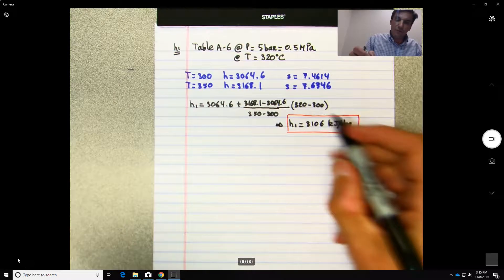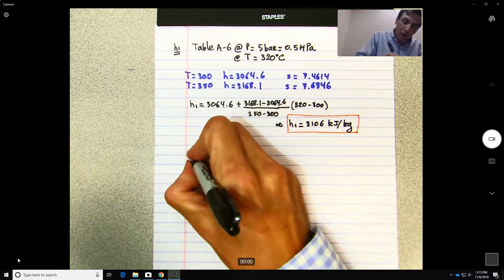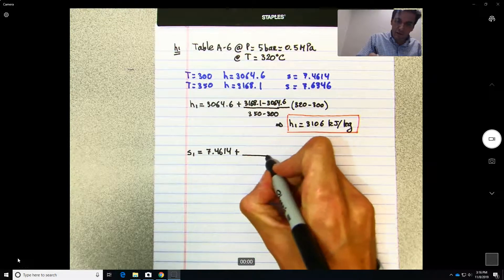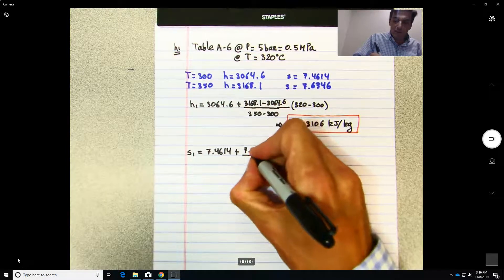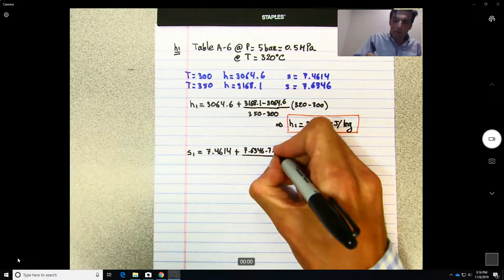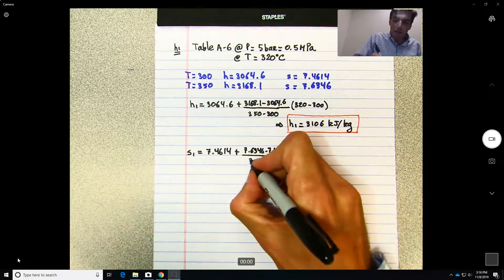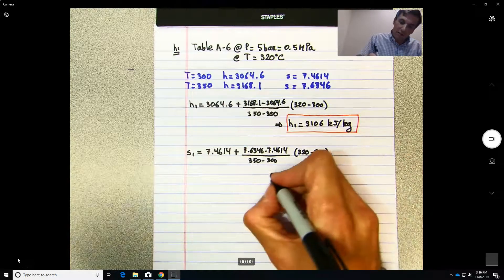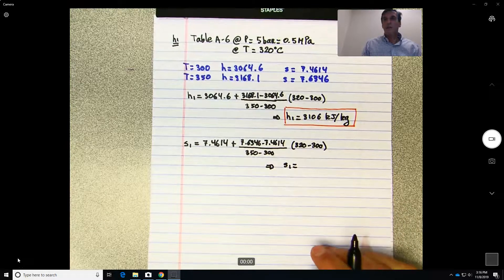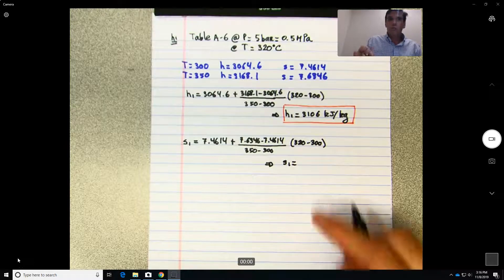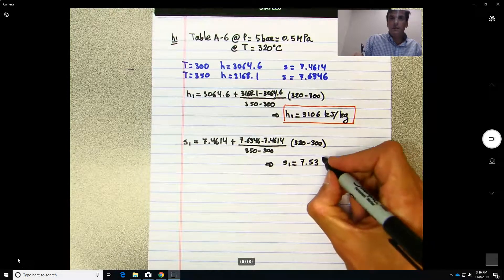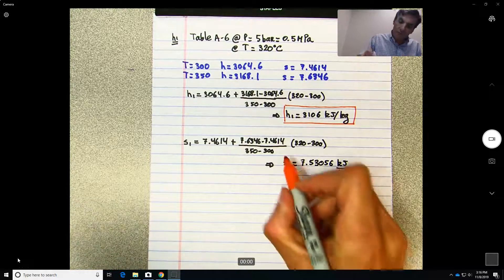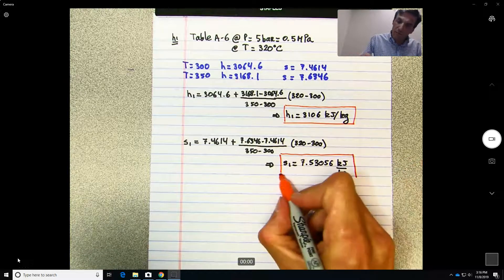If we do exactly the same thing now, the same thing but for the entropy, you're going to get that s1 will be equal to 7.4614 plus (7.6346 minus 7.4614) divided by (350 minus 300) times (320 minus 300). This is going to give us that the entropy at 1 is equal to 7.53056 kilojoules per kilogram kelvin.